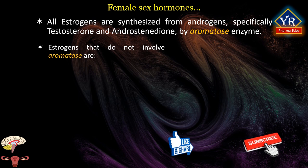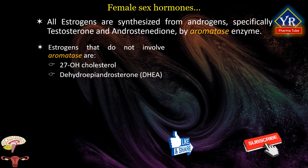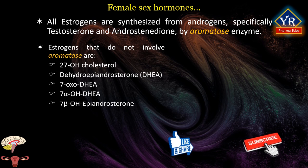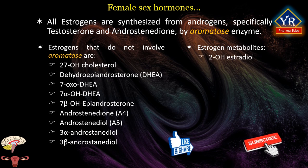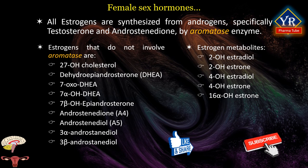Major endogenous estrogens whose biosynthesis does not involve aromatase include 27-hydroxycholesterol, dehydroepiandrosterone, 7-oxo-dehydroepiandrosterone, 7-alpha-hydroxydehydroepiandrosterone, 7-beta-hydroxyepiandrosterone, androstenedione, 3-alpha-androstenediol, and 3-beta-androstenediol. Some estrogen metabolites such as catecholestrogens — 2-hydroxyestradiol, 2-hydroxyestrone, 4-hydroxyestradiol, 4-hydroxyestrone, and 16-alpha-hydroxyestrone — are also estrogens with varying degrees of activity, though their biological importance is not clearly understood.